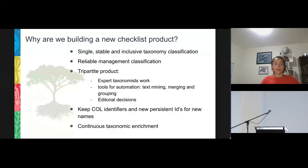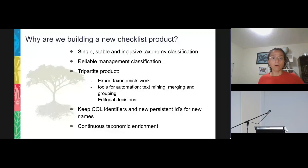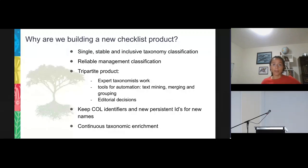The desire now is to have a more stable and all-inclusive taxonomy classification that can be broadly and easily shared and that represents a reliable management classification. It might be continually updated by a tripartite process, which considers the work of expert taxonomists, the input of informatic tools like text mining, merging and grouping names from different sources, and incorporating editorial decision-making based on taxonomic criteria. We also have planned to keep the CoL identifiers, which are persistent identifiers, and then to create new persistent identifiers for the additional names being included. That's why we are building a new checklist product.